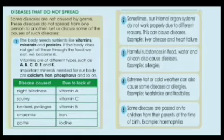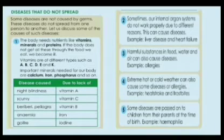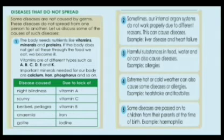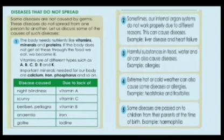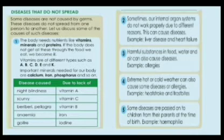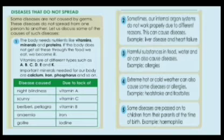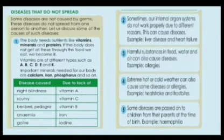Vitamins are of different types such as A, B, C, D, E, and K. Important minerals needed for our body are calcium, iron, phosphorus, and so on. Lack of vitamin A can cause night blindness, lack of vitamin C can cause scurvy, lack of vitamin B can cause beriberi and pellagra, lack of iron can cause anemia, and lack of iodine can cause goiter. You have to learn this table very thoroughly.